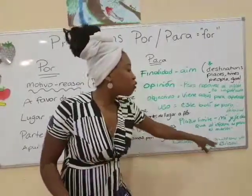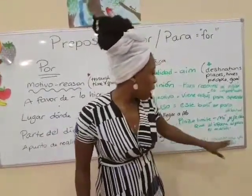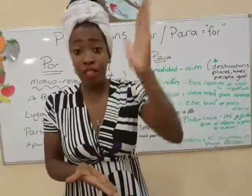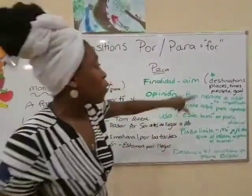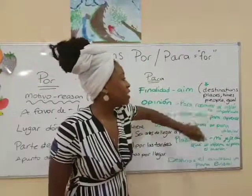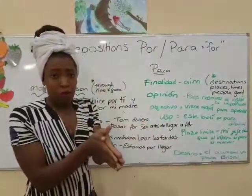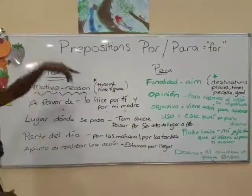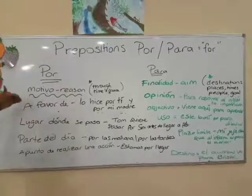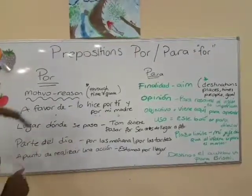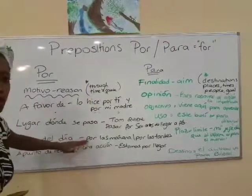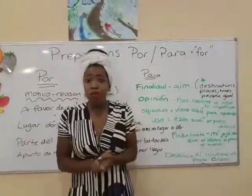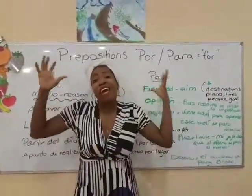And the last point for 'para' is destination. For example, 'el autobús va para Bristol' — the bus is heading to Bristol. So to recap: 'para' is used for destination, places, times, people, and goals. 'Por' is used for passing through time and space, for someone, and to talk about parts of the day. I hope this has been useful to you!